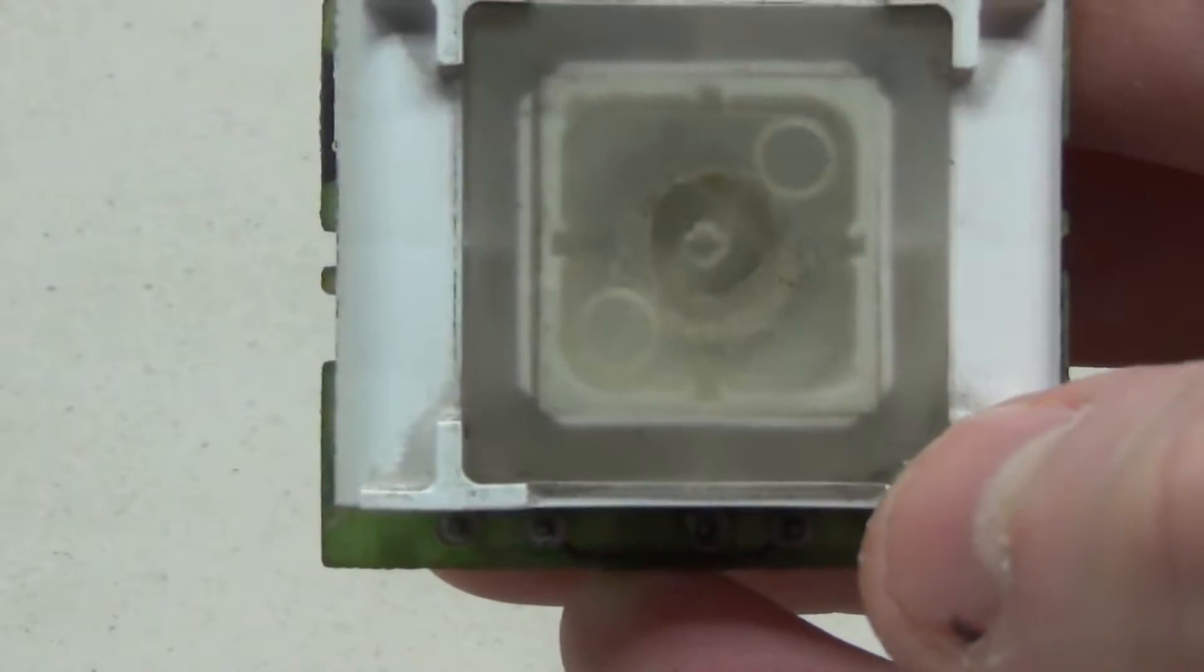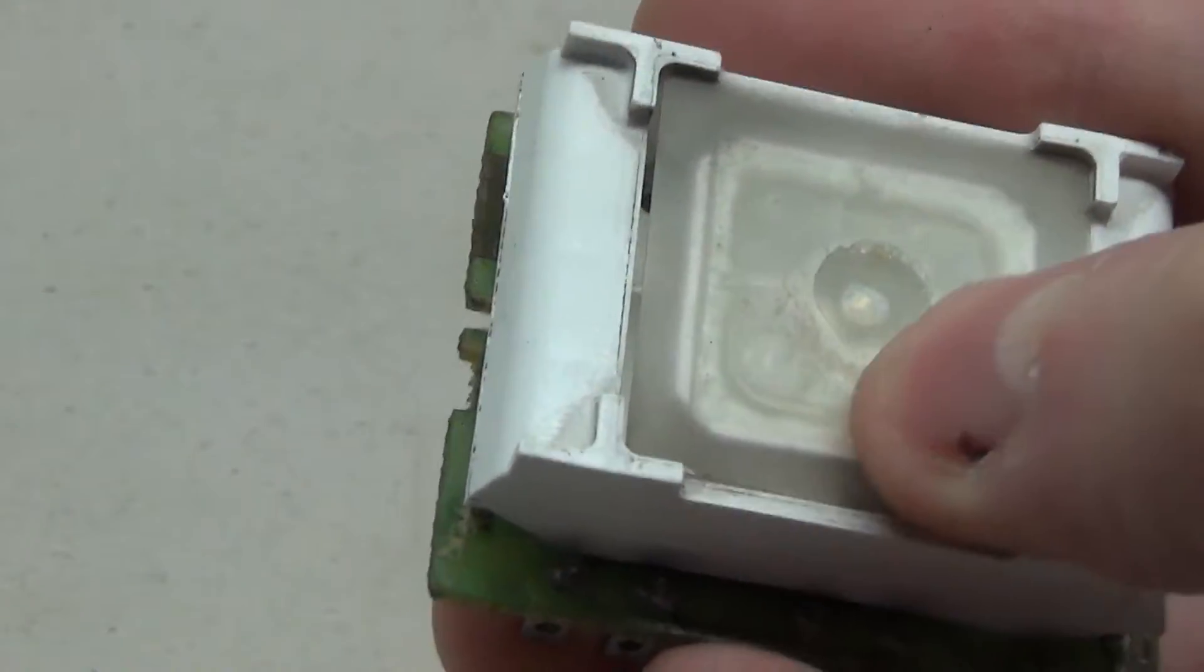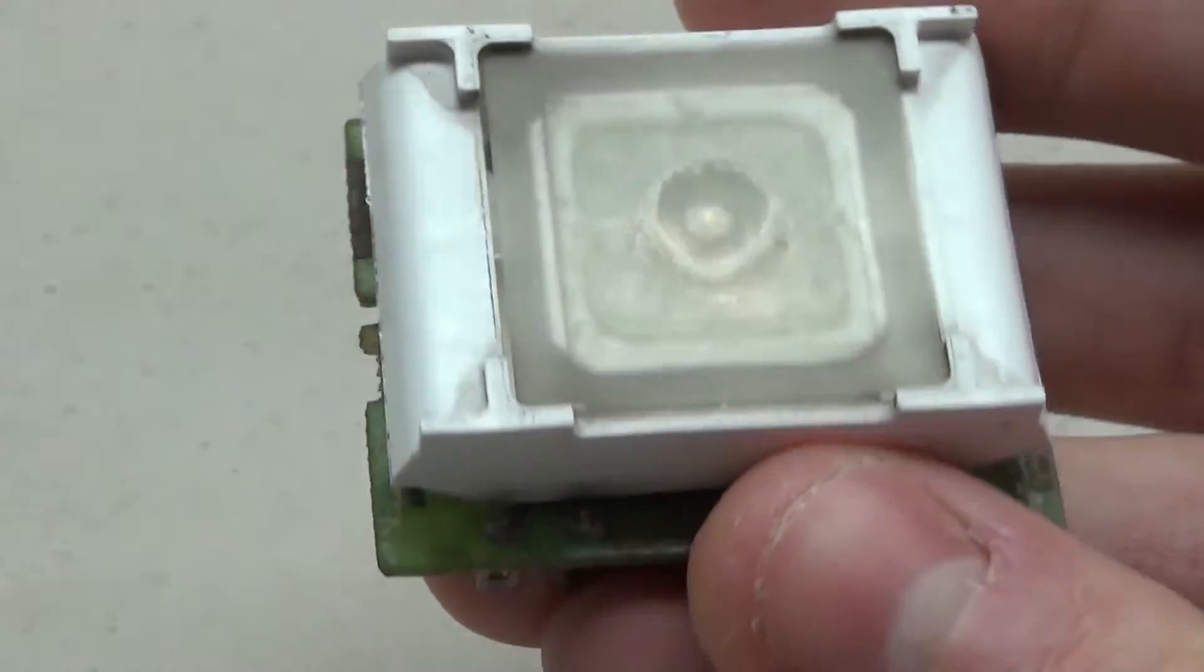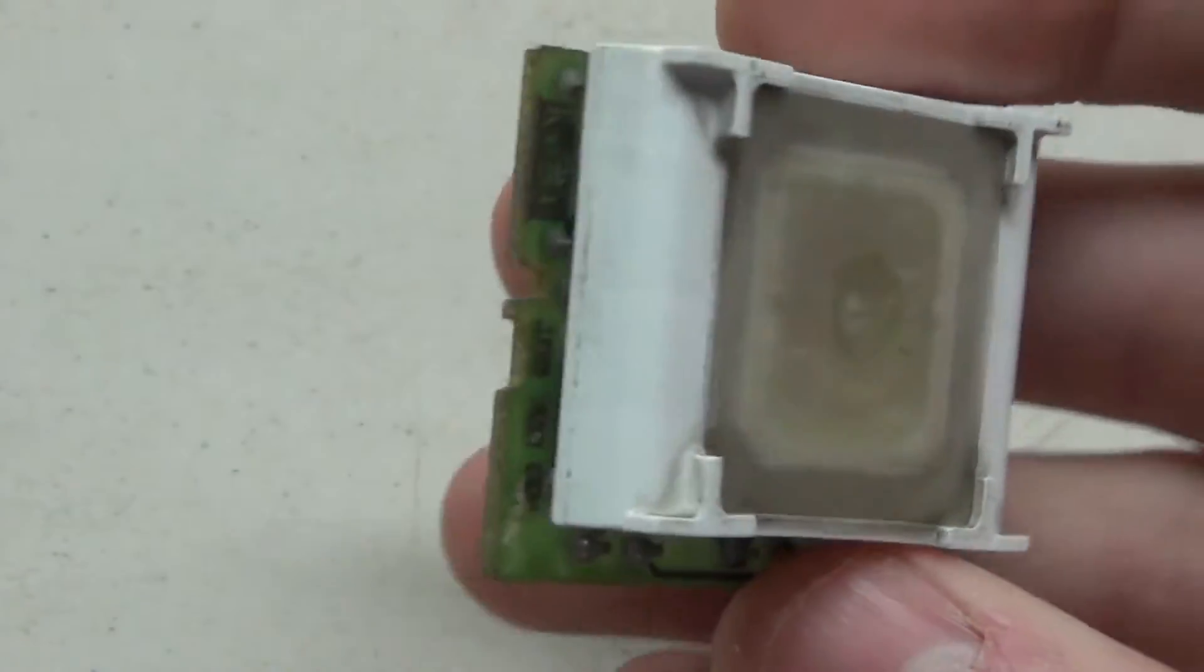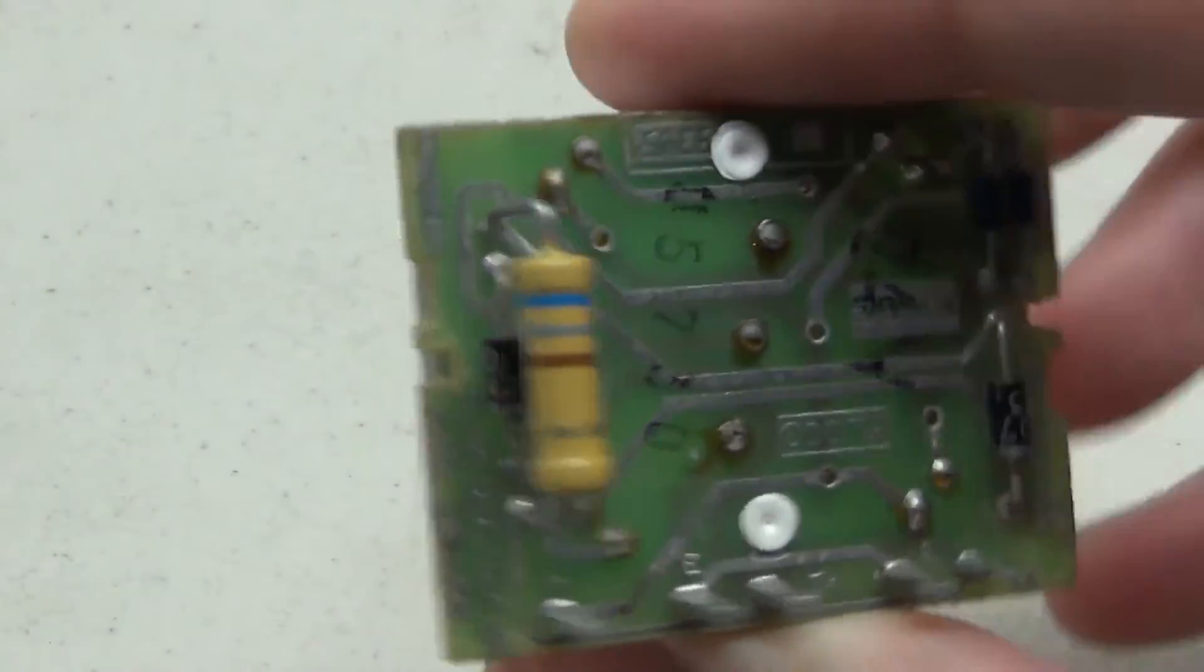And then the LEDs are underneath this little cover. It's almost like a little plastic cover that is glued down in the middle, so you can't really do a whole lot more work on these circuit boards. You can't really break them down anymore without really breaking the button, but it's kind of interesting to see how these work.